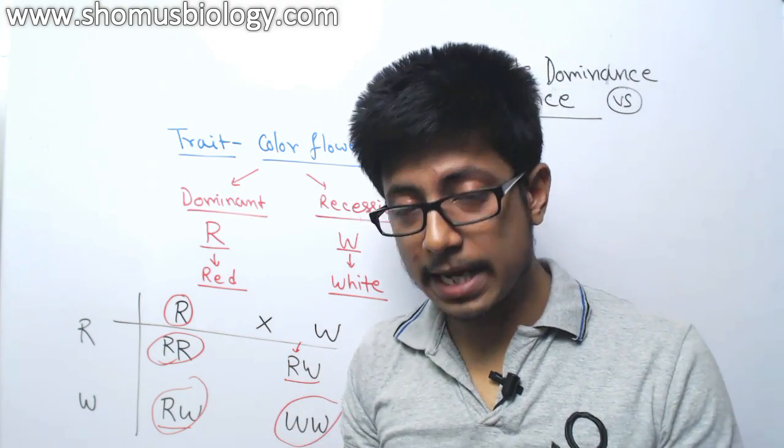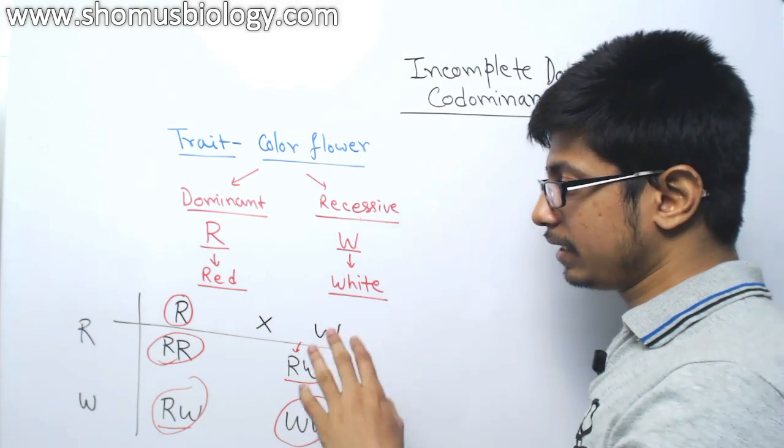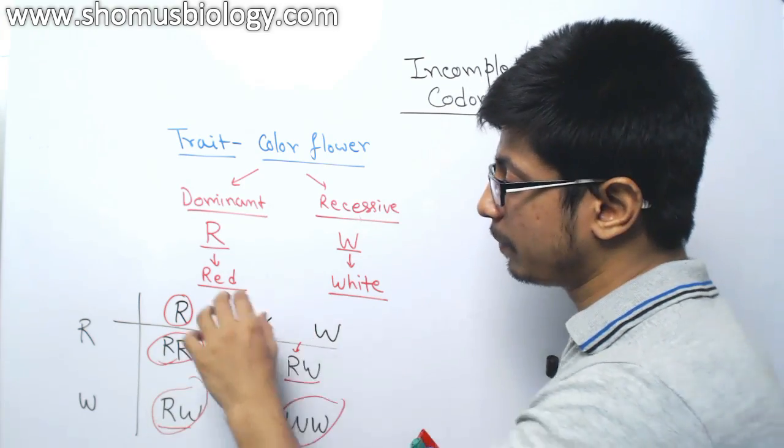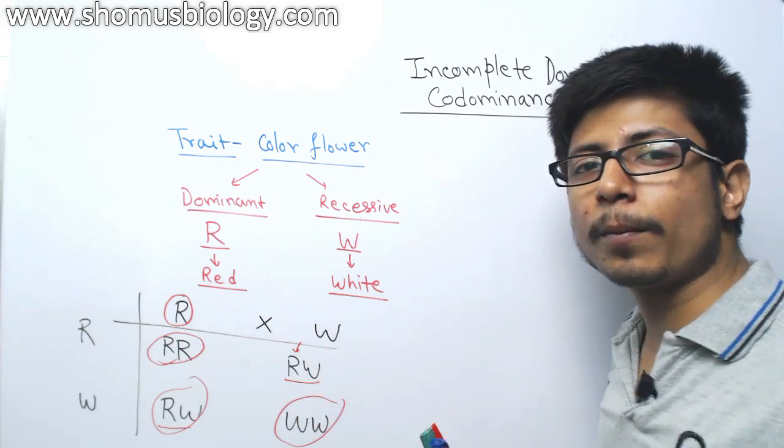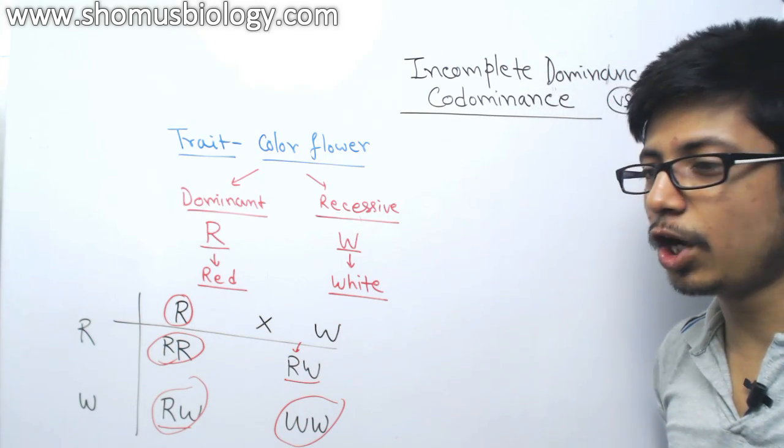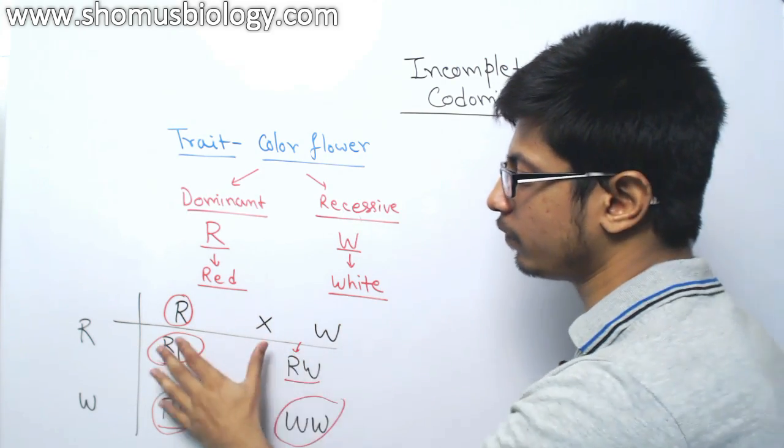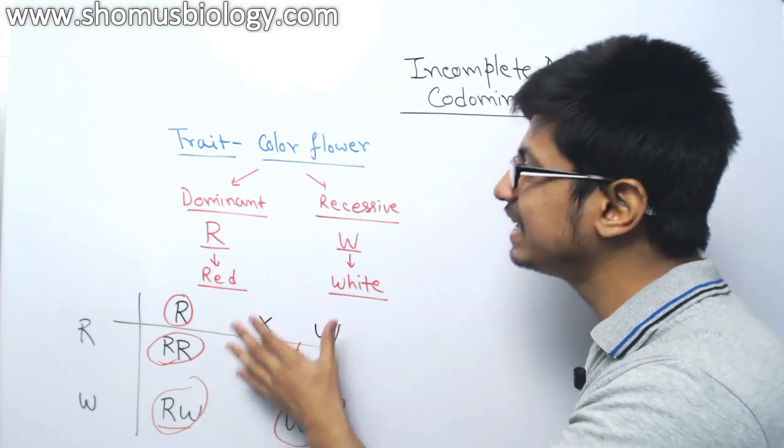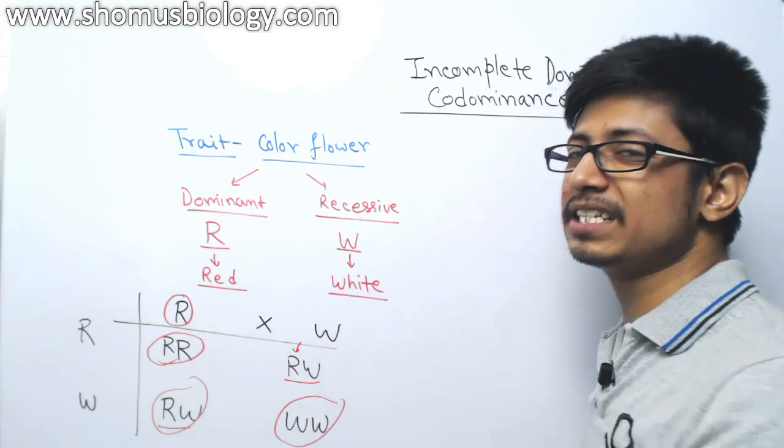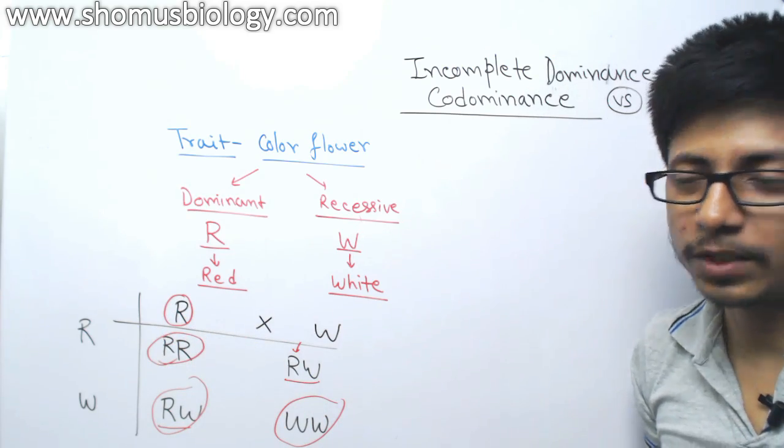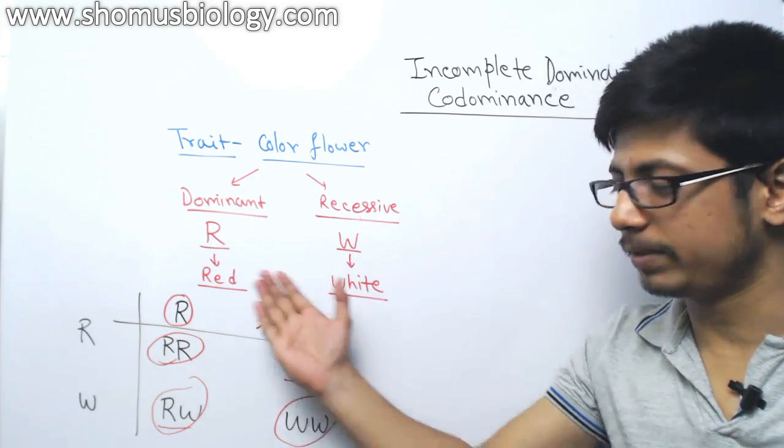Now we explain this phenomena, we can only tell is that according to Mendel we should have a red color. But this R allele, which is a dominant allele, failed to be properly expressed. It is not completely expressed in the F1 generation. We call it incomplete dominance because dominant factor is not completely expressed. That is the incomplete dominance.